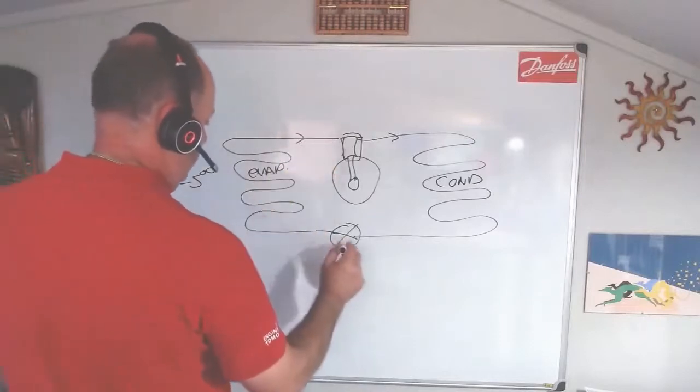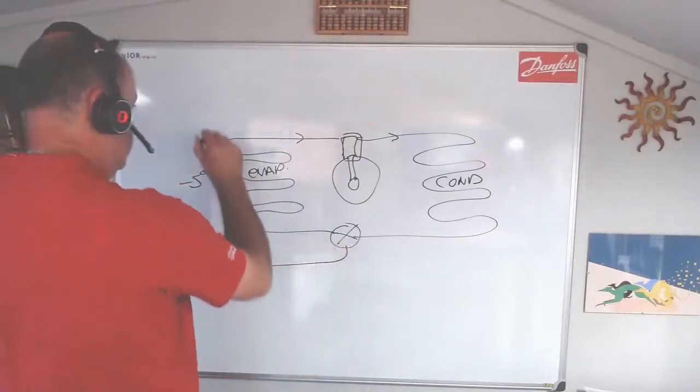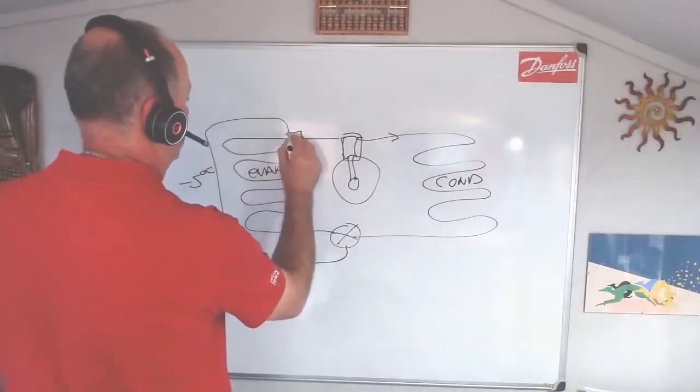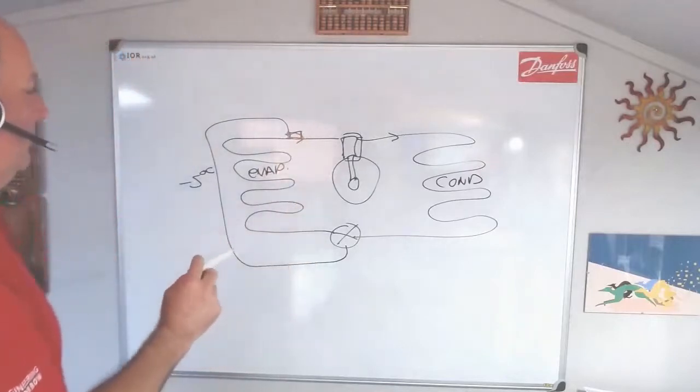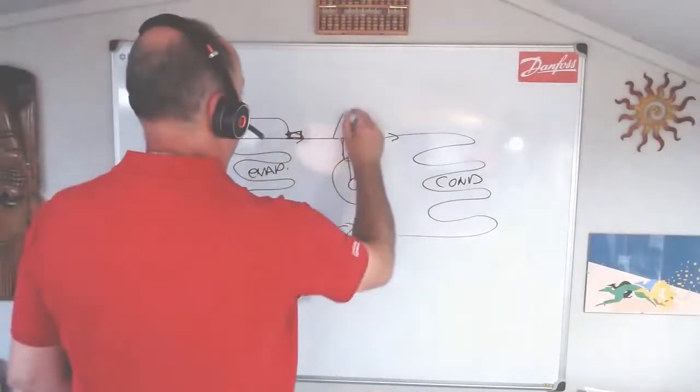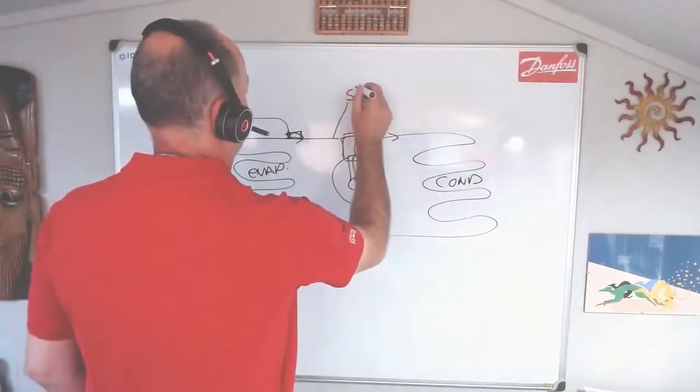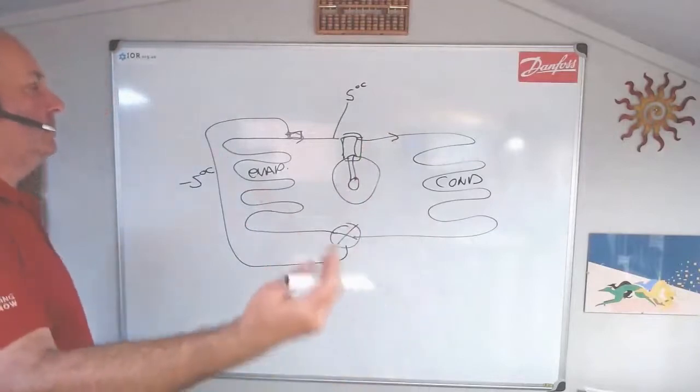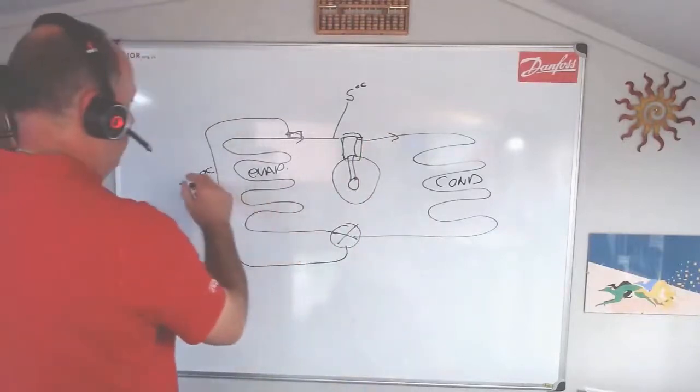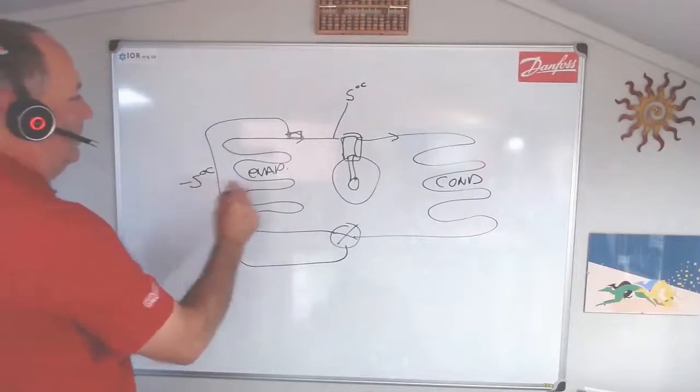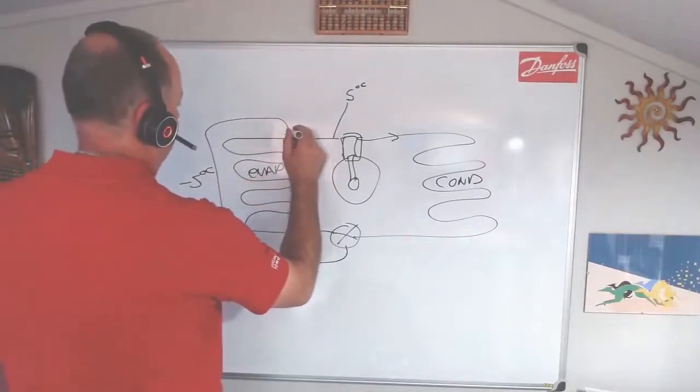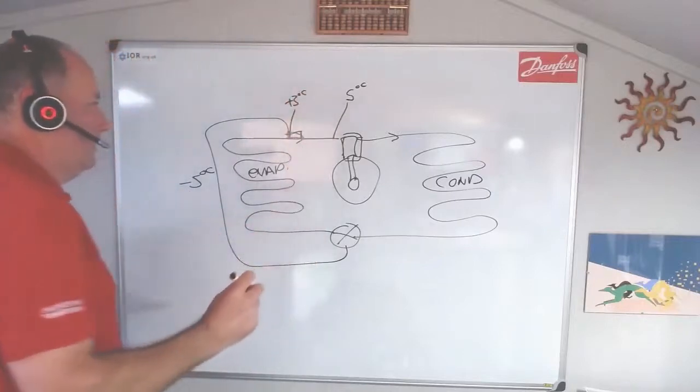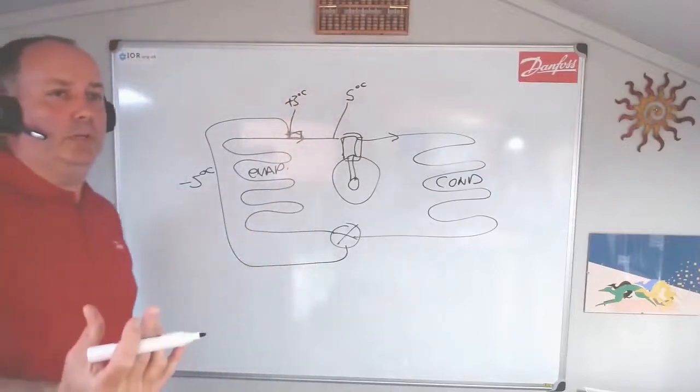So let's say we are evaporating minus five. With our expansion valve bulb, let's come around here. There's our bulb on our suction line. So we're measuring the superheat on our evaporator. Now, if our suction temperature is minus five, depending on the refrigerant that we're using, if we're evaporating minus five there, and we've got let's say plus three there,